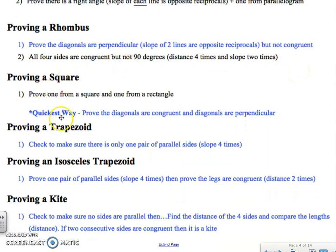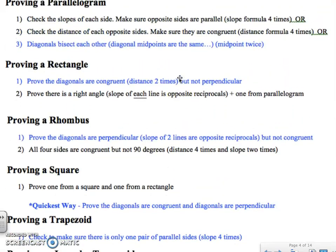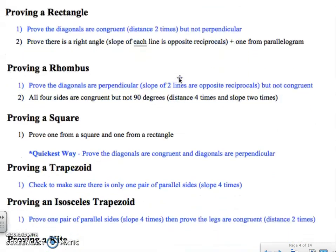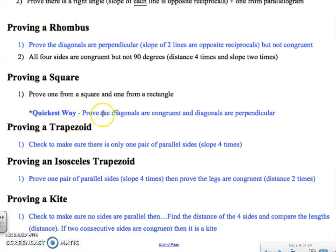To prove a square, the quickest way is to prove that the diagonals are both congruent and perpendicular. For a trapezoid, you need to make sure there's only one pair of parallel sides — do the slope formula four times and make sure only one pair of sides is parallel.